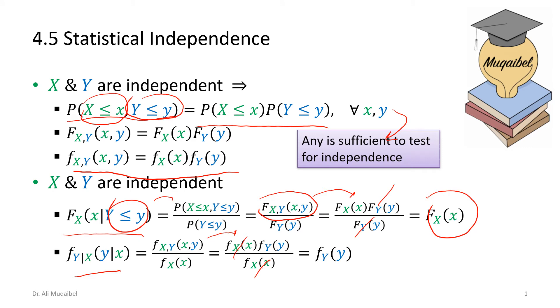Any one of these conditions is sufficient to claim independence; you do not need to search for other facts. If this is true, we can conclude independence directly — it is a sufficient condition.